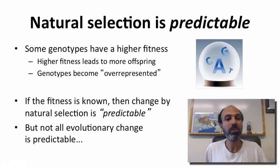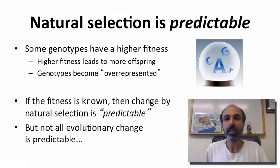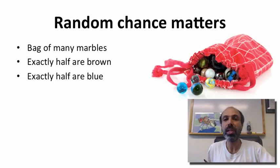But not all evolutionary change is this predictable. As I mentioned, species typically have finite numbers of individuals. As a result of that, random chance matters.